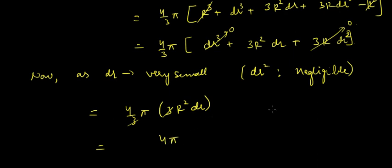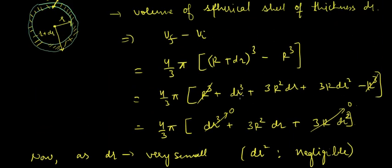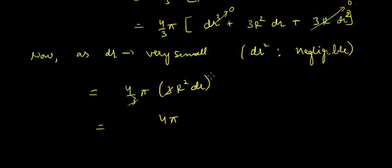Thus 4π r² dr. There is no difference between capital R and small r here; the capital R we used was the radius of the inner sphere only, so I'm just replacing it with small r. So this is the volume of spherical shell of thickness dr.